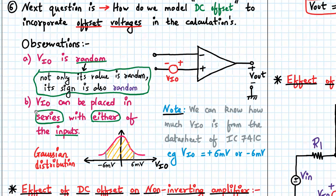Second observation: VIO, the input offset voltage, can be placed in series with either of the inputs. We can model it by placing a small battery in series indicating VIO.